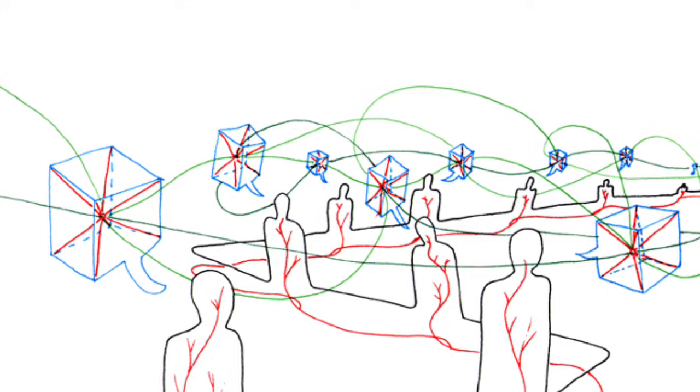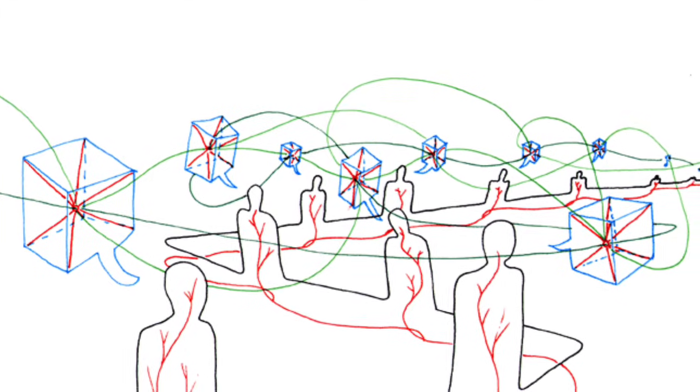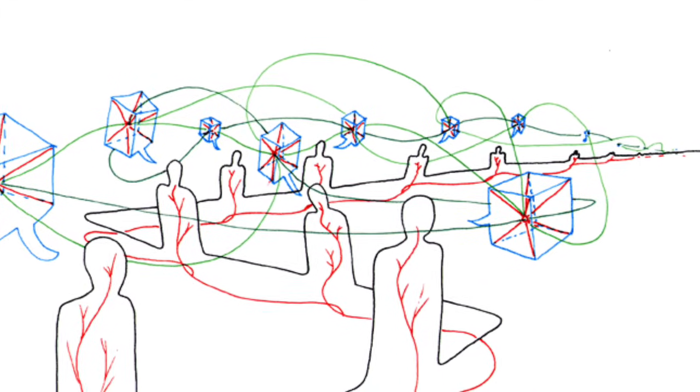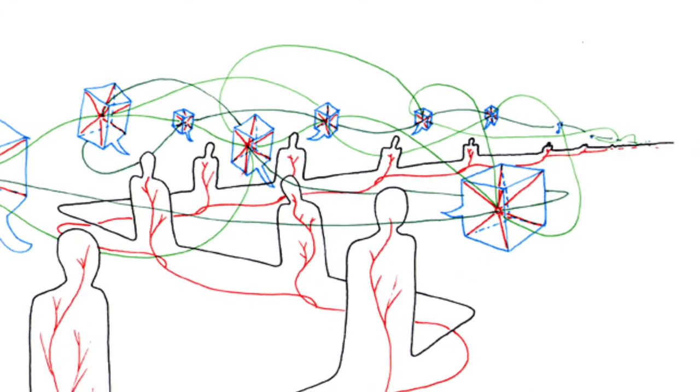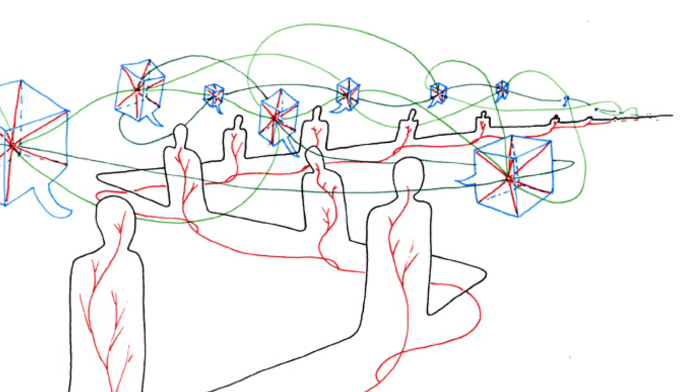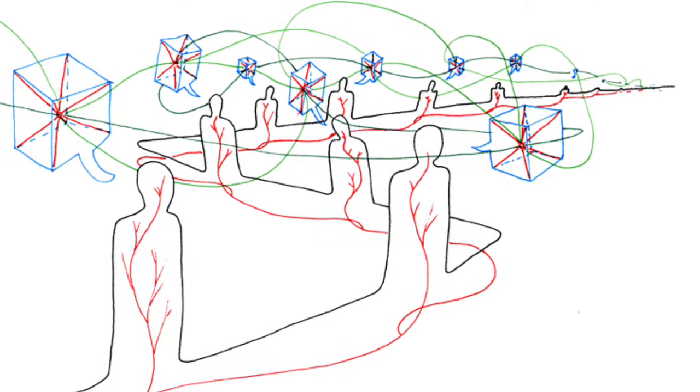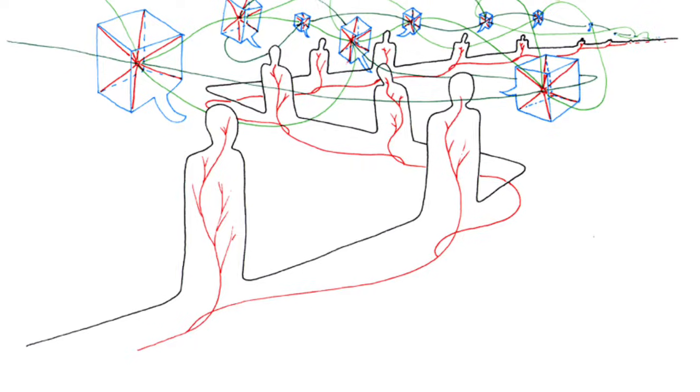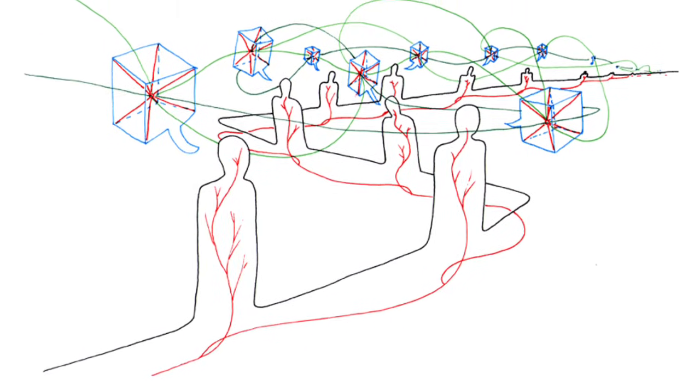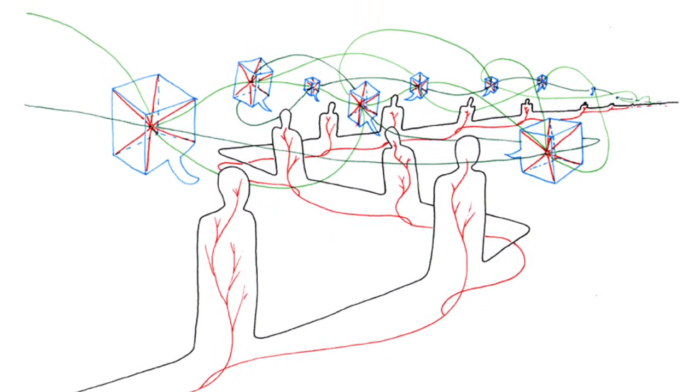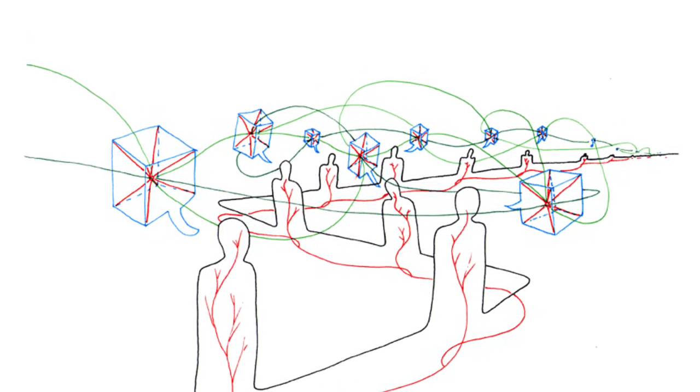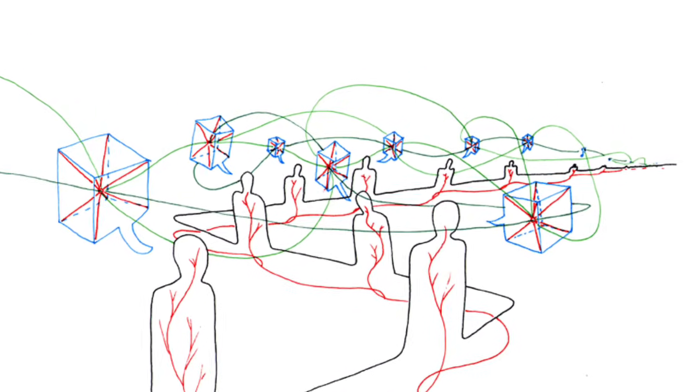A rhizome ceaselessly establishes connections between semiotic chains, organizations of power, and circumstances relative to the arts, sciences, and social struggles. A semiotic chain is like a tuber, agglomerating very diverse acts, not only linguistic, but also perspective, mimetic, gestural, and cognitive. There is no language in itself, nor are there any linguistic universals, only a throng of dialectics, patois, slangs, and specialized languages. There is no ideal speaker-listener any more than there is a homogenous linguistic community. Language is, in Weinrich's words, an essentially heterogeneous reality. There is no mother tongue, only a power takeover by a dominant language within a political multiplicity. Language subsidizes around a parish, a bishopric, a capital. It forms a bulb. It evolves by subterranean stems and flows along river valleys or train tracks. It spreads like a patch of oil.